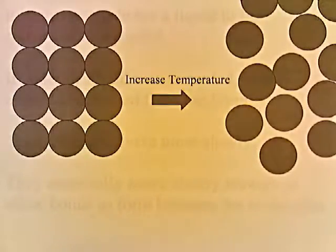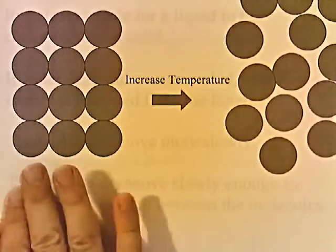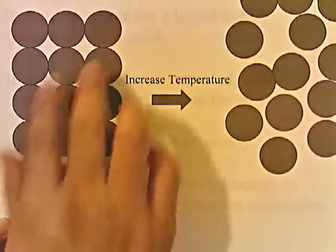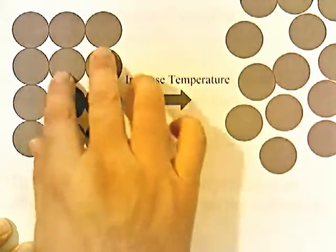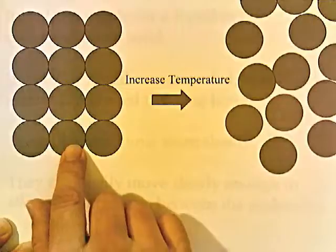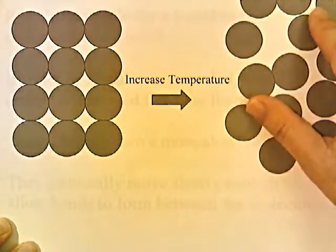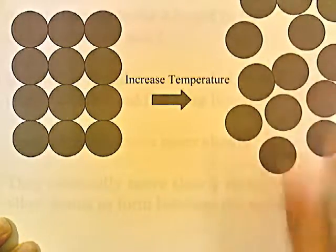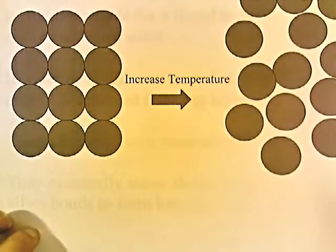Here we have a picture of an orderly solid. If you add heat or increase the temperature, the molecules start vibrating and then move fast enough to start sliding past each other. When there's enough space for the molecules to start sliding past each other, you have liquid. That's how you turn a solid into a liquid.